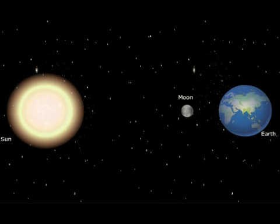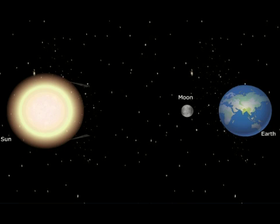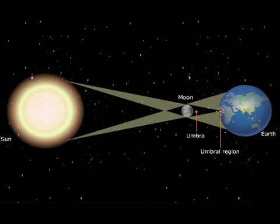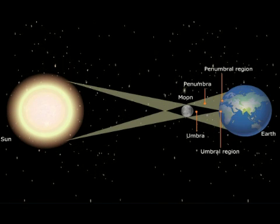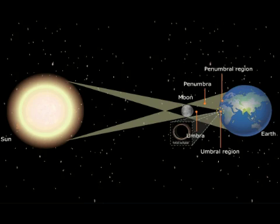The shadow of the Moon falls on the Earth. Some places on Earth are in the umbral region of the shadow. Some places are in the penumbral region. People in the umbral region see a total solar eclipse.